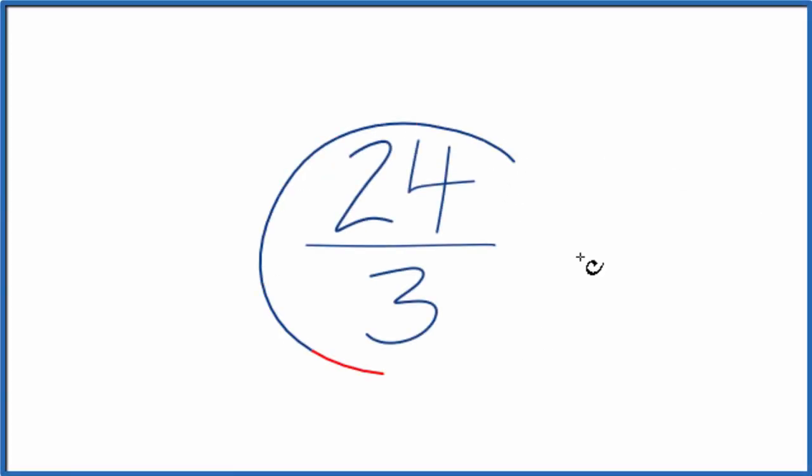Let's simplify the fraction 24 thirds. We want to find another fraction that's equivalent to 24 over 3, but simplified or reduced down to lowest terms.